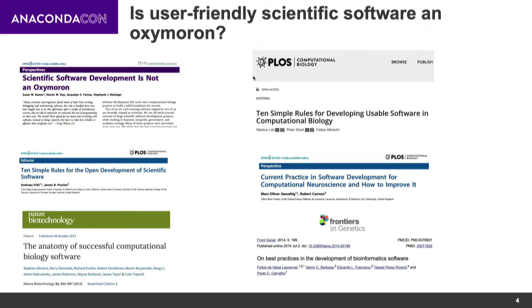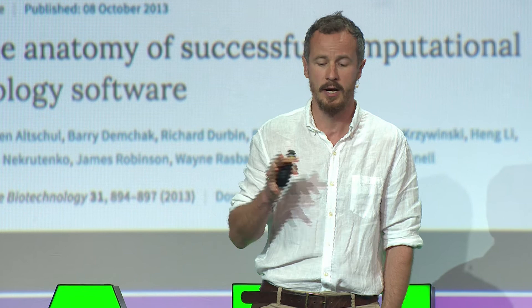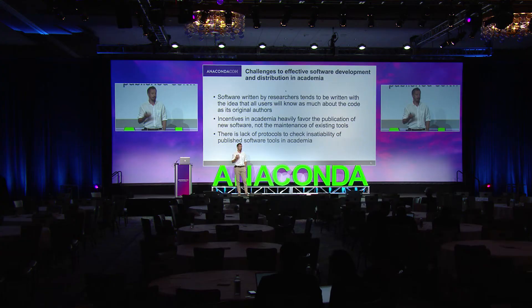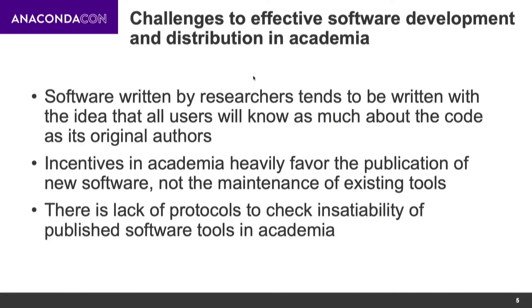We were interested in whether we can assess the field — how many tools are usable, how many are not, and what should we do. Before I tell you our results, I want to define a couple of things. The main challenge in developing scientific software in academia is the lack of experience — people who develop software are not necessarily trained to be software developers. As a result, they develop software with the idea that the user knows as much about it as they do, which is not necessarily true.